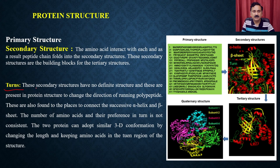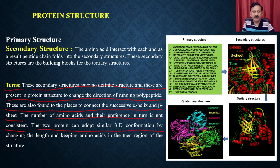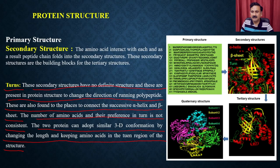Turns are secondary structures with no definite structure and are present to change the direction of the running polypeptide. They are also found connecting successive alpha helices and beta sheets. The number of amino acids and their preference in turns is not consistent — two proteins can adopt a similar 3D conformation by changing the length and keeping the amino acid in the turn region. The turn is an unstructured region but has huge significance in providing flexibility to different protein structures.